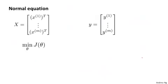Gradient descent was just one of our two algorithms for fitting a linear regression model. The second algorithm was the one based on the normal equation where what we did was we created the design matrix X where each row corresponded to a separate training example. And we created a vector Y. So this is a vector that's an M dimensional vector. And that contained the labels from our training set.